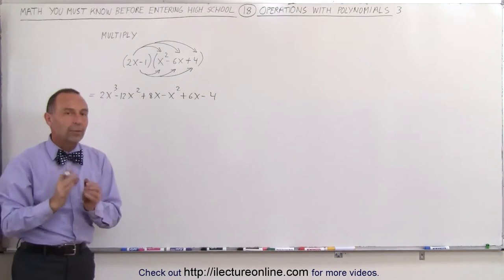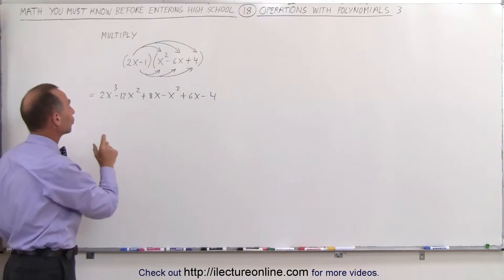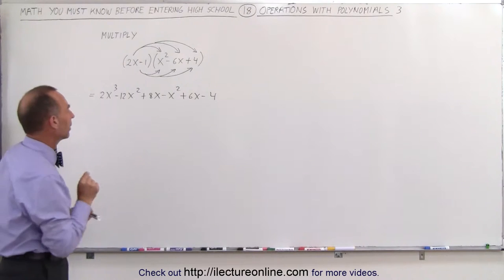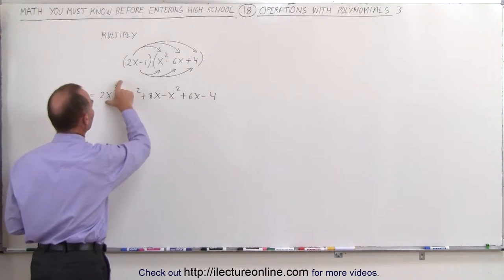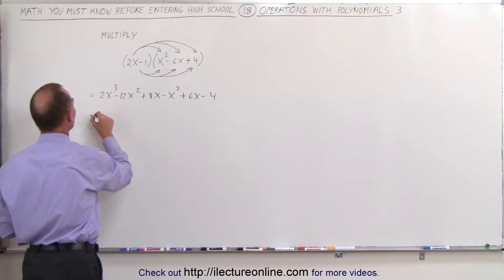Now what we have to do is collect common terms, which means we'll look for every term that has the same letter part. So here we have 2x cubed. There's only one term that has x cubed, so we leave that alone. This is equal to 2x cubed.